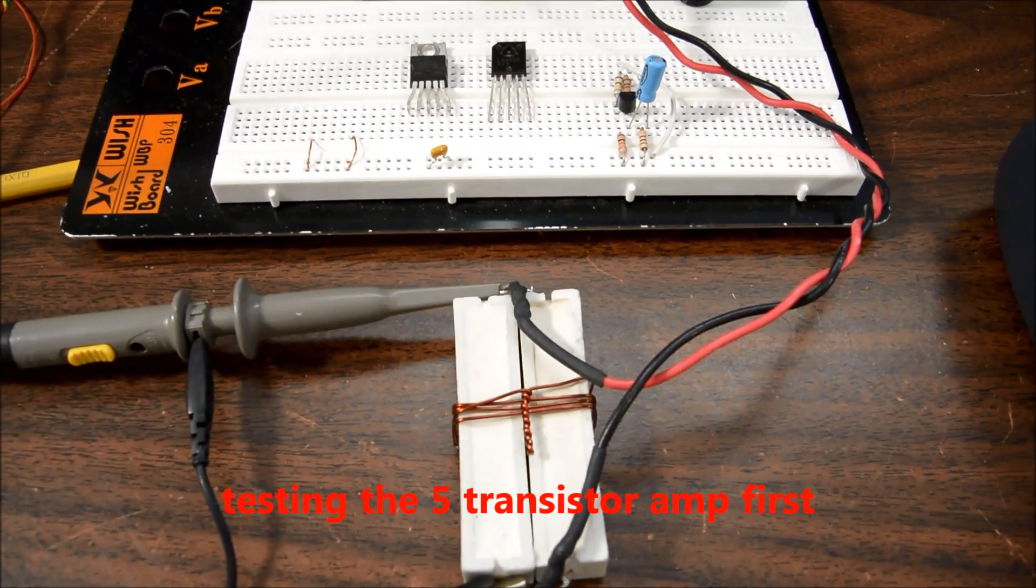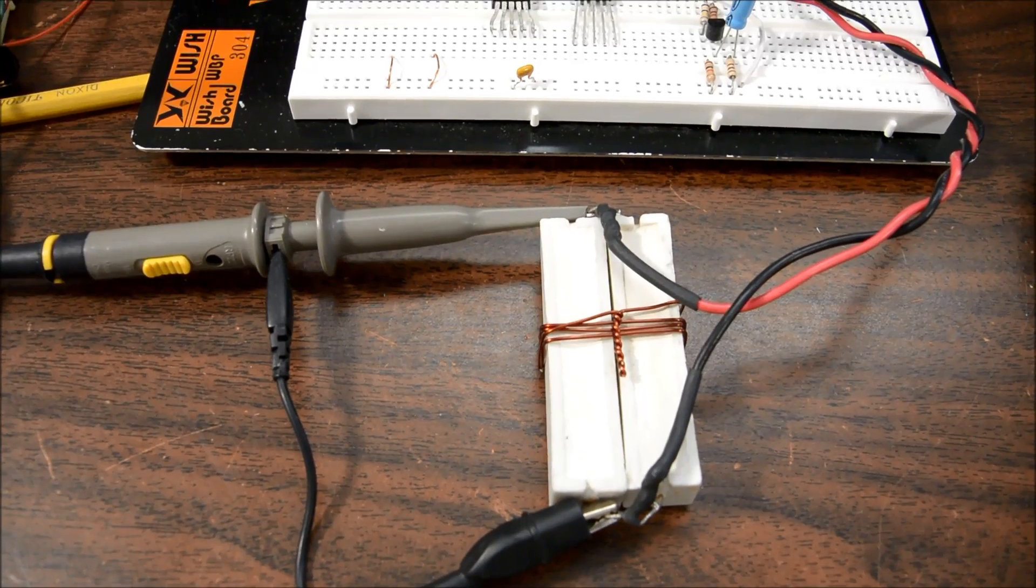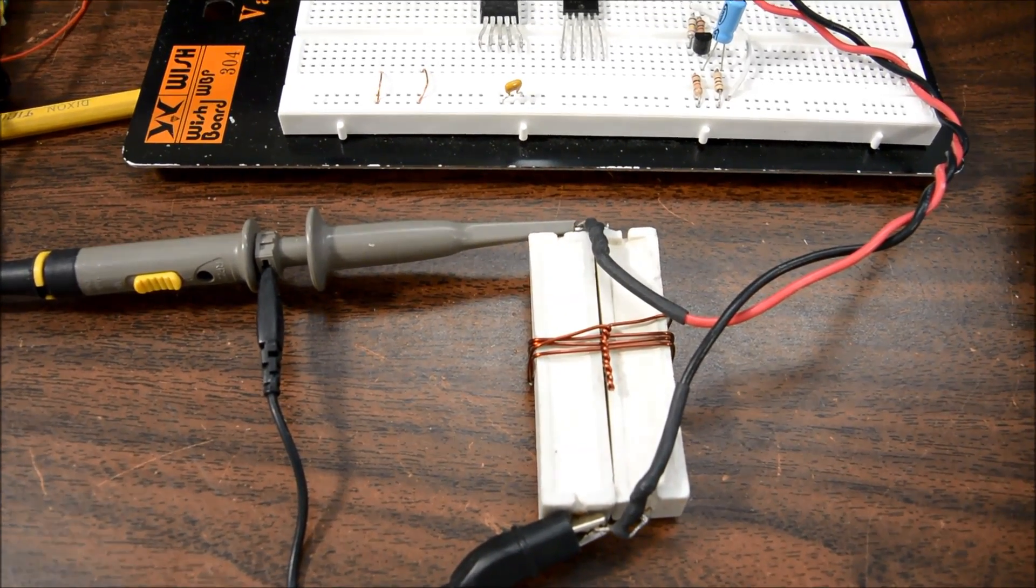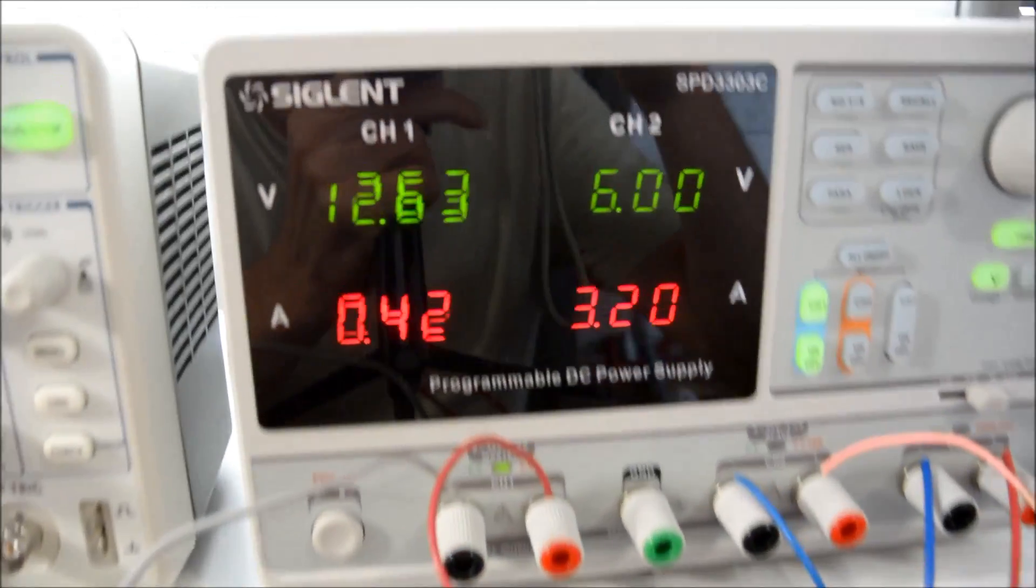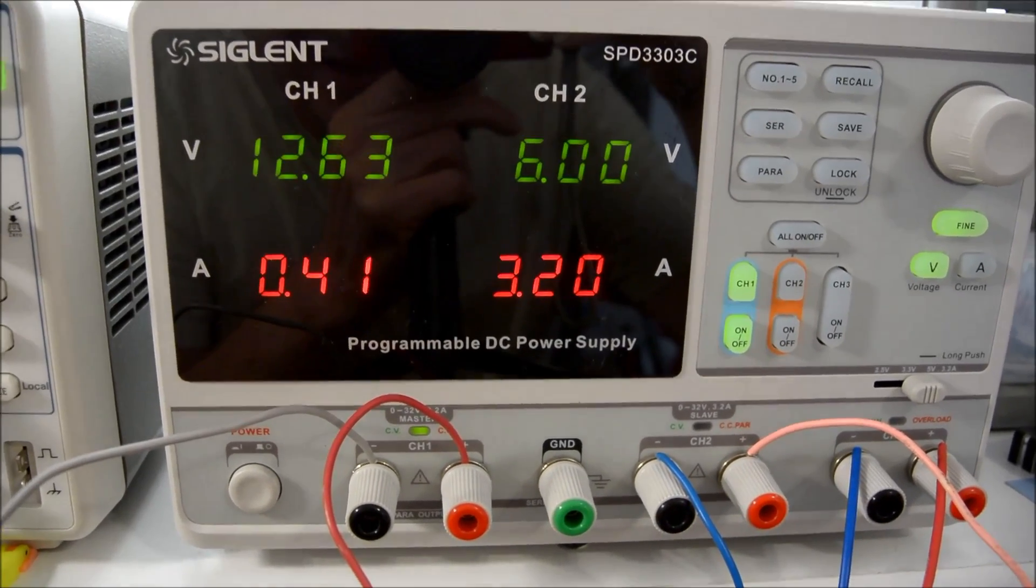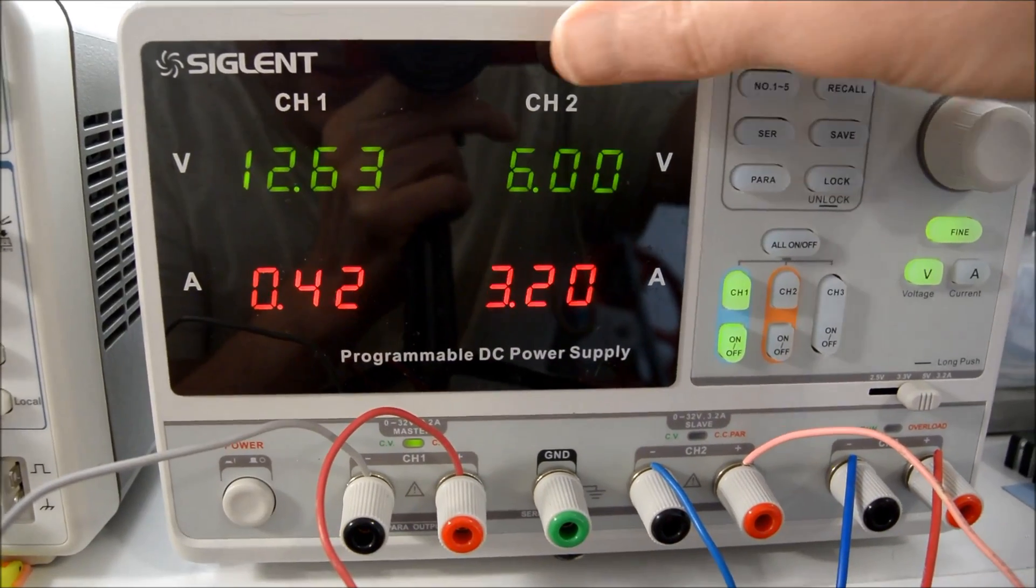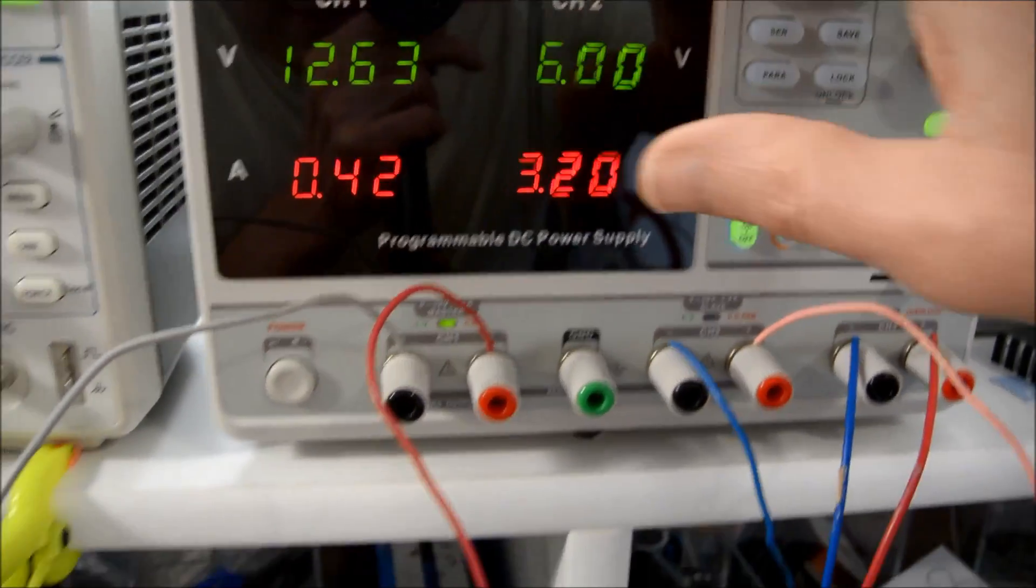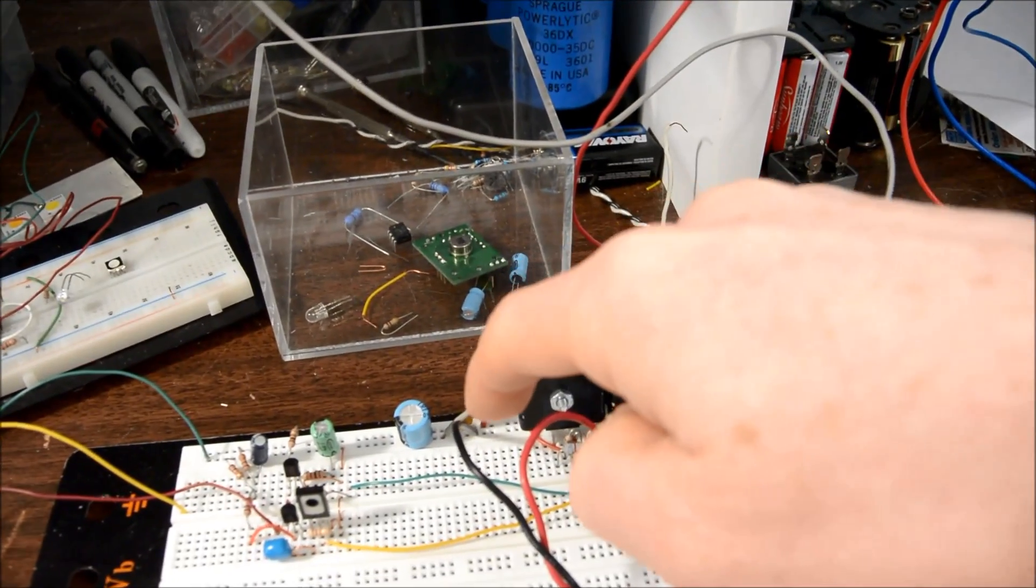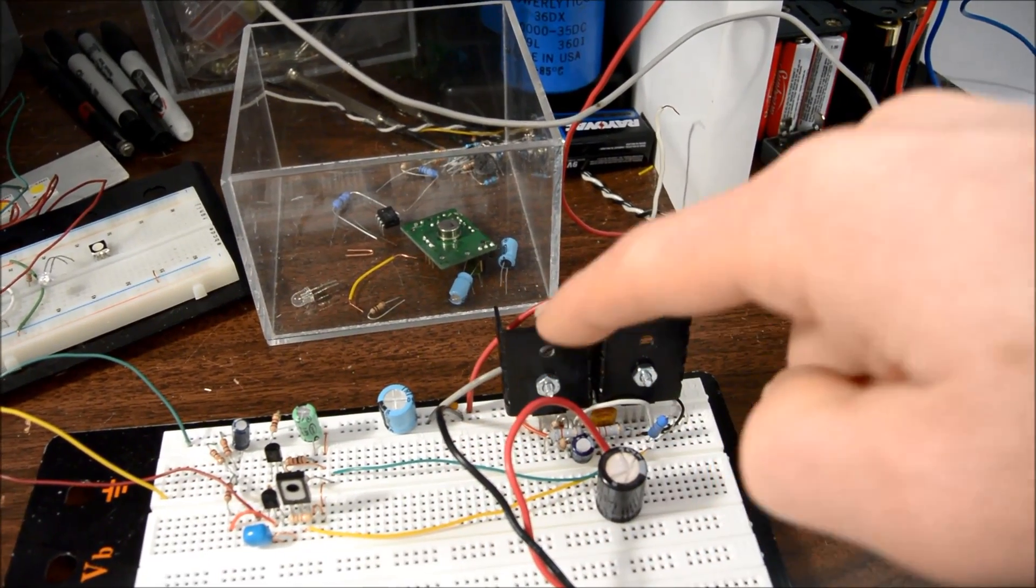Okay, I have the 4 ohm load hooked up. I'm going to scope right across the load. And oh, look at that - what is that, a new power supply already? Love it. Have it set for 12.63 volts. And I measured it because I want exactly 12.6 volts at this point. There are some losses in the wires, to be fair in the comparison.